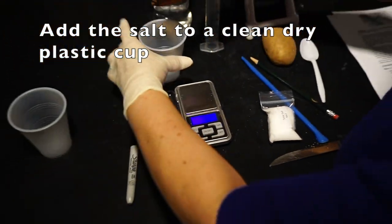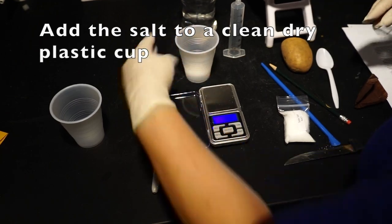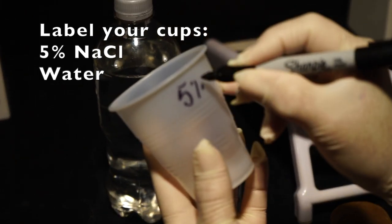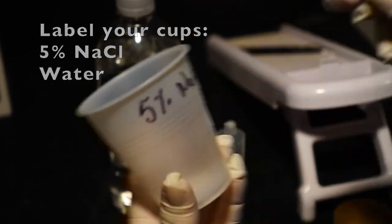Add the 5 grams of salt to the clean dry plastic cup. Be sure to label the cups. One should be labeled 5% sodium chloride and the other should be labeled water.